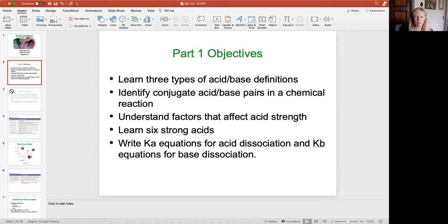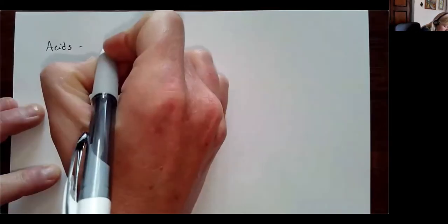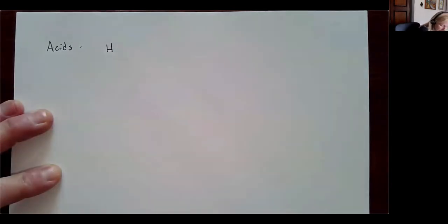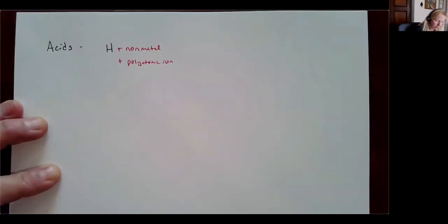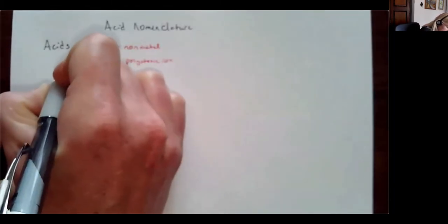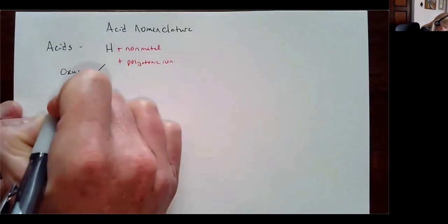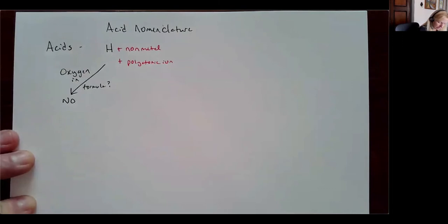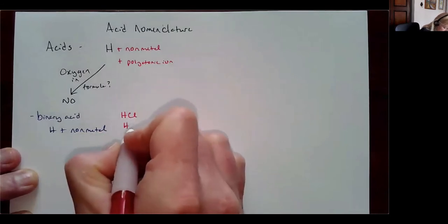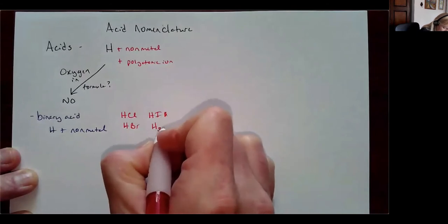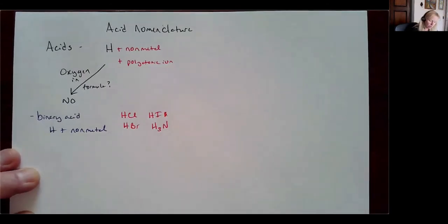Before we start, let's back up and talk about nomenclature — just a brief review. Acids generally start with a hydrogen plus a nonmetal, or hydrogen plus a polyatomic ion. Our naming tree starts with: is there oxygen present in the formula? If no, then I have a binary acid — hydrogen plus a nonmetal. Some examples are HCl, HBr, HI, and H₃N.